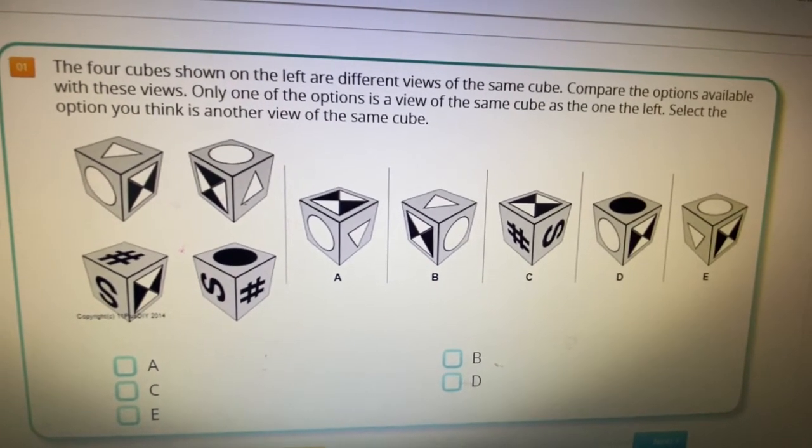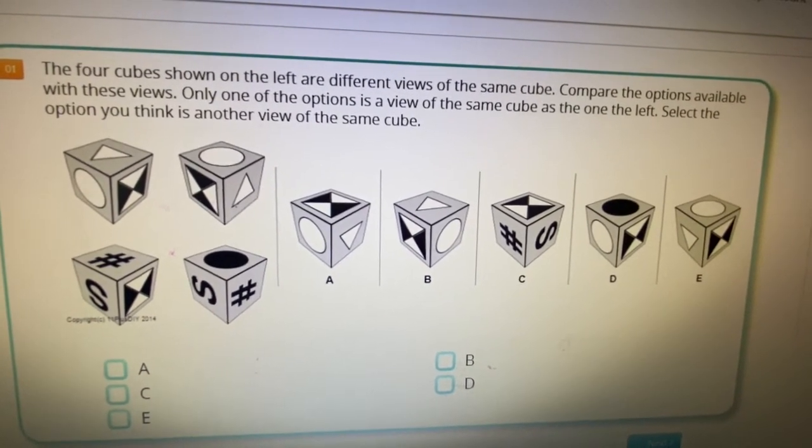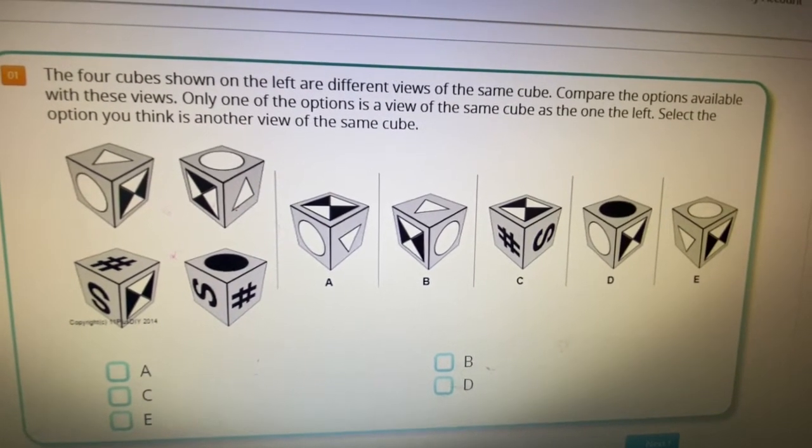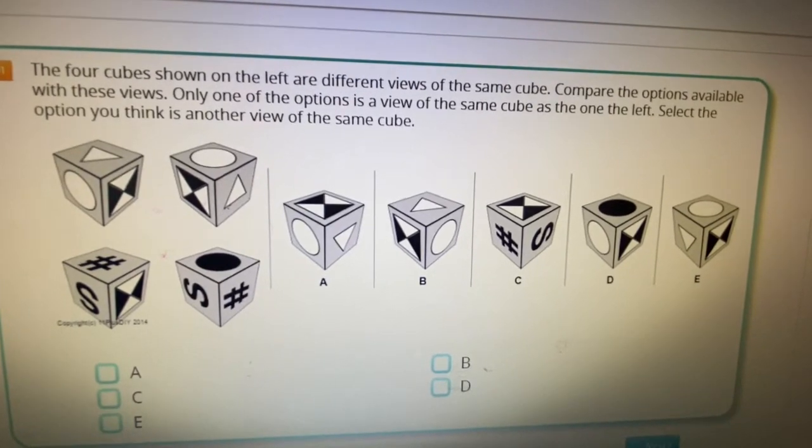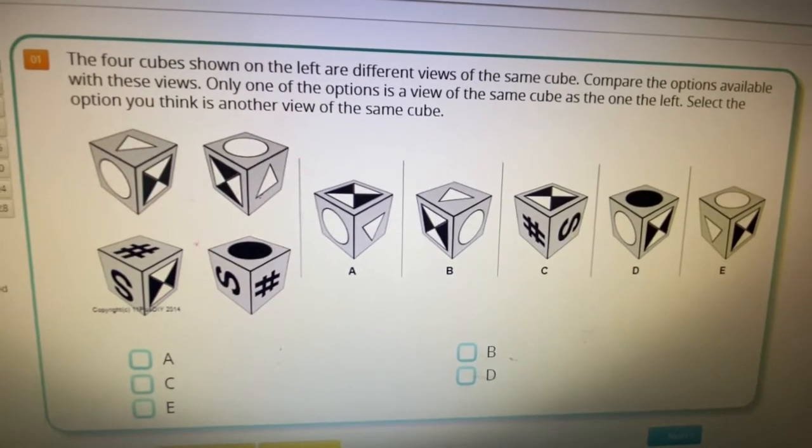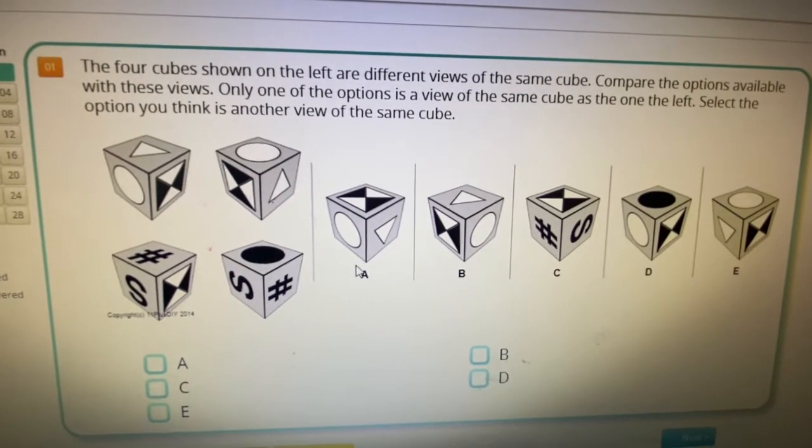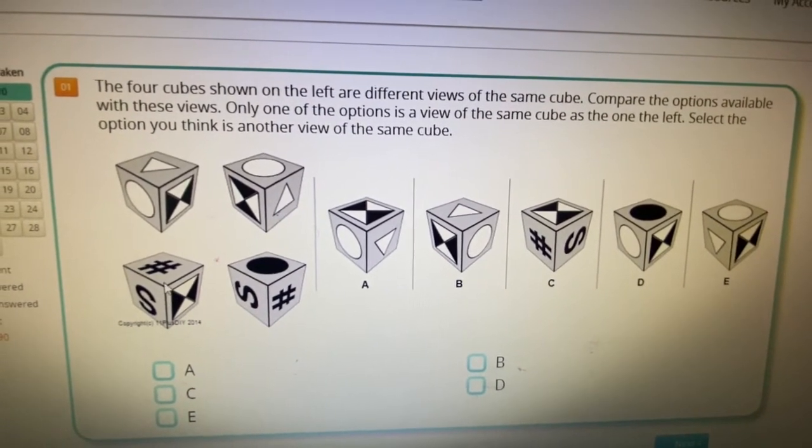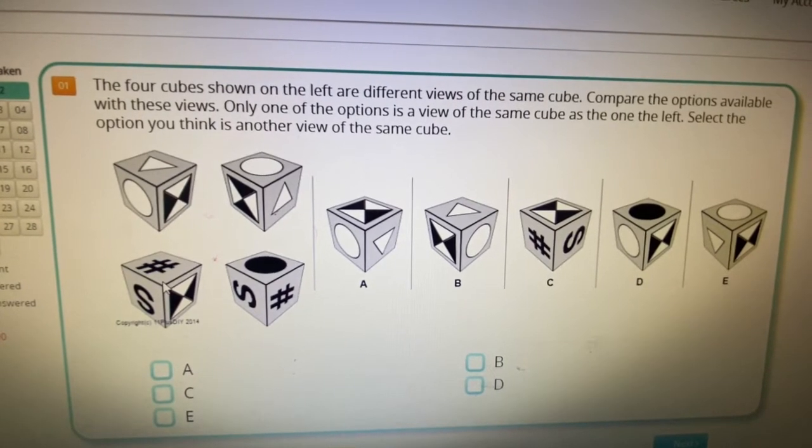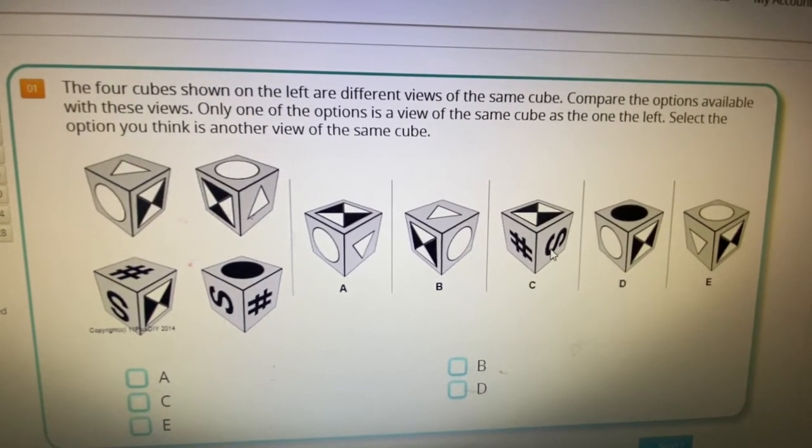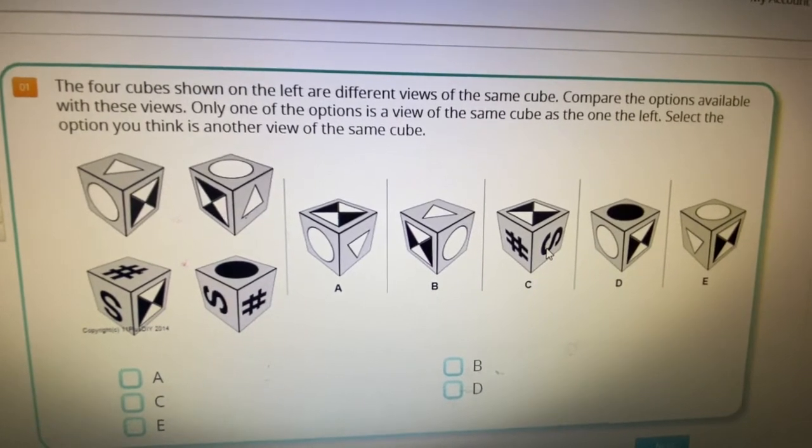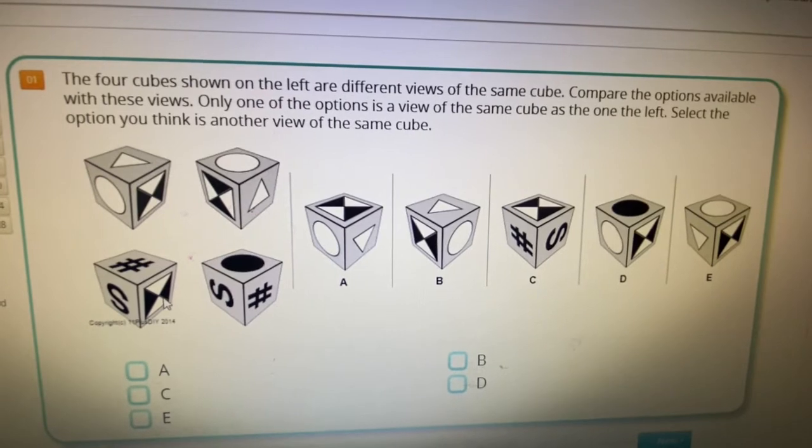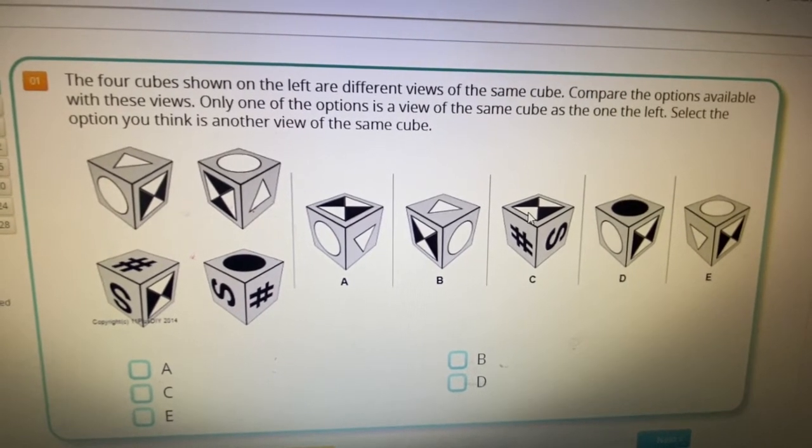So tell us how you're going to work out the answer for this now. I'm going to look at all of the cubes. I know that there's a hashtag and S and something that's black and white. Then you have to identify the one of these types that has all three of these shapes to make it easier. And the only one is C.